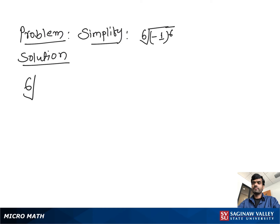Simplify the 6th root of negative 1 raised to the 6th power. Here we see that negative 1 raised to the 6th power makes a positive number. So what we actually have here is the 6th root of positive 1, because negative 1 raised to the 6th power makes positive 1.